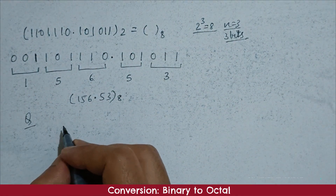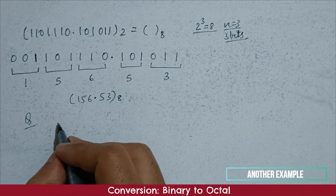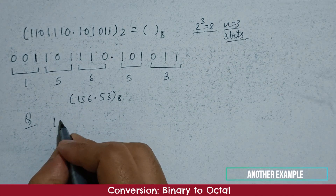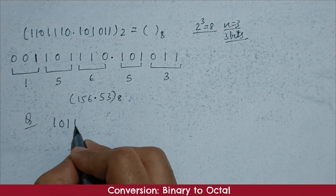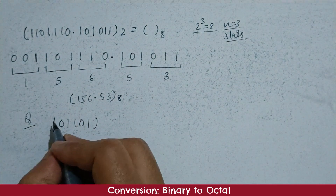We will convert another binary number into octal. Let's write down the binary number: 1, 0, 1, 1, 0, 1.